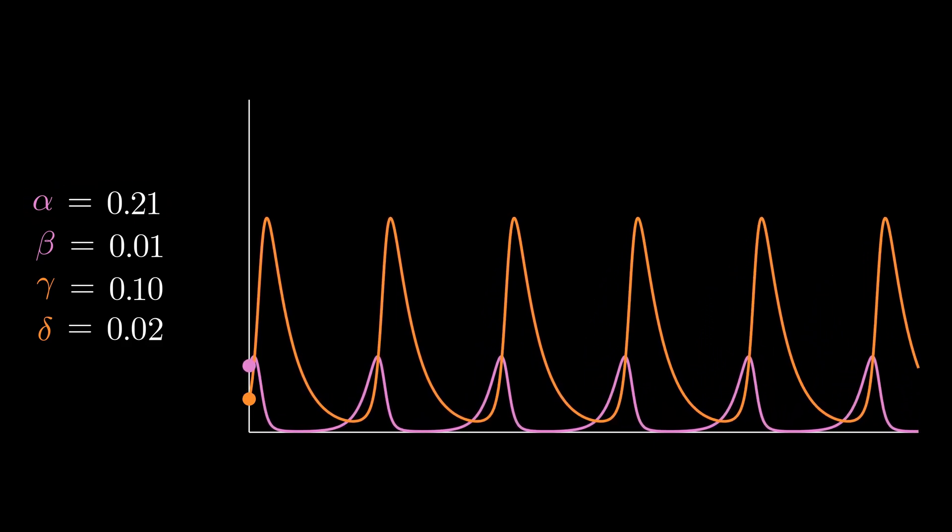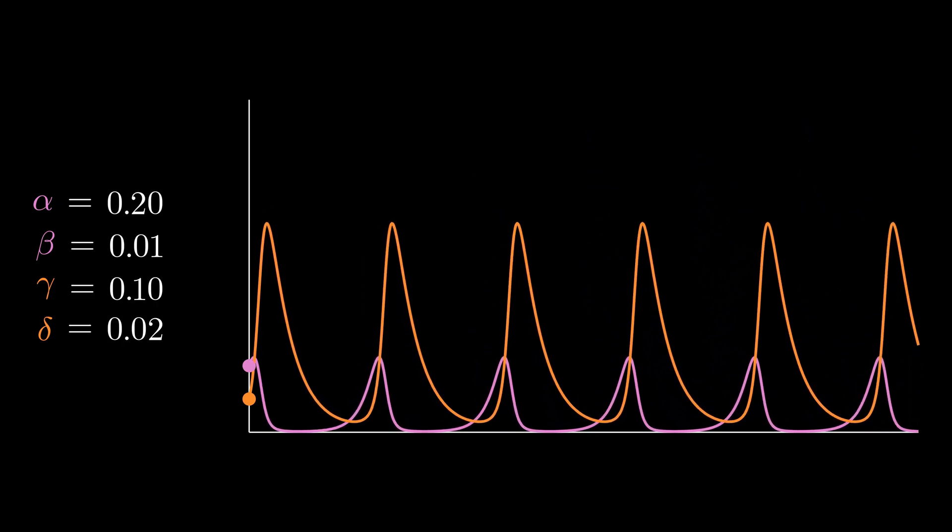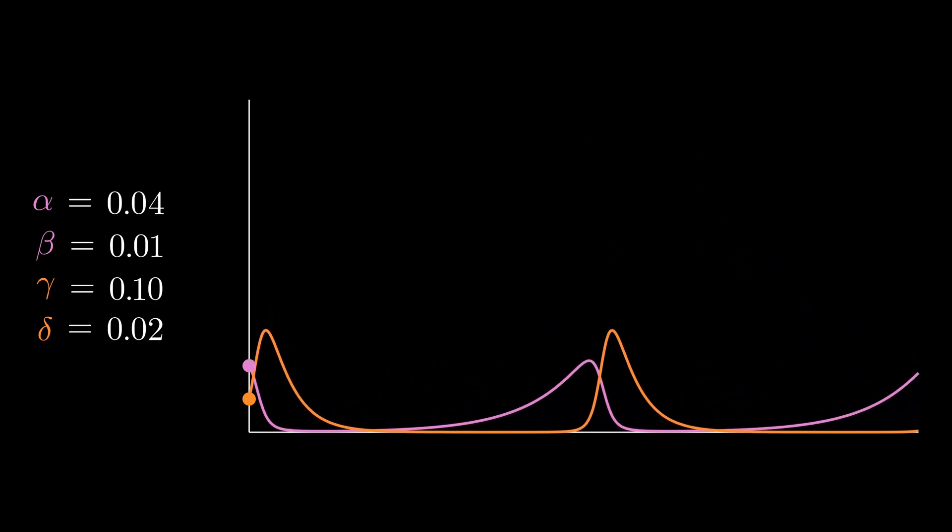Increasing the reproduction rate of prey has a huge effect on the maximum prey population which of course makes sense given that the predators need to catch up with that growth first. And when we instead decrease it, it drags out the whole process because the rabbits will take so much time to reproduce. But notice how the width of the peaks stayed about the same.